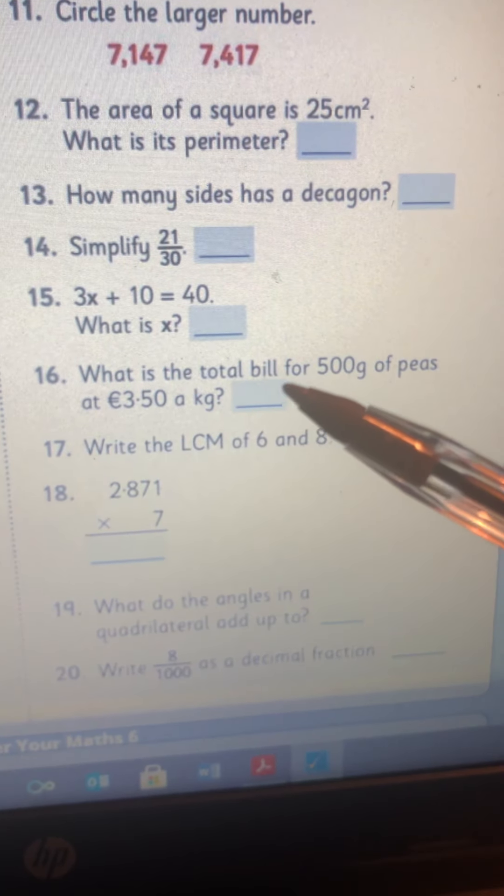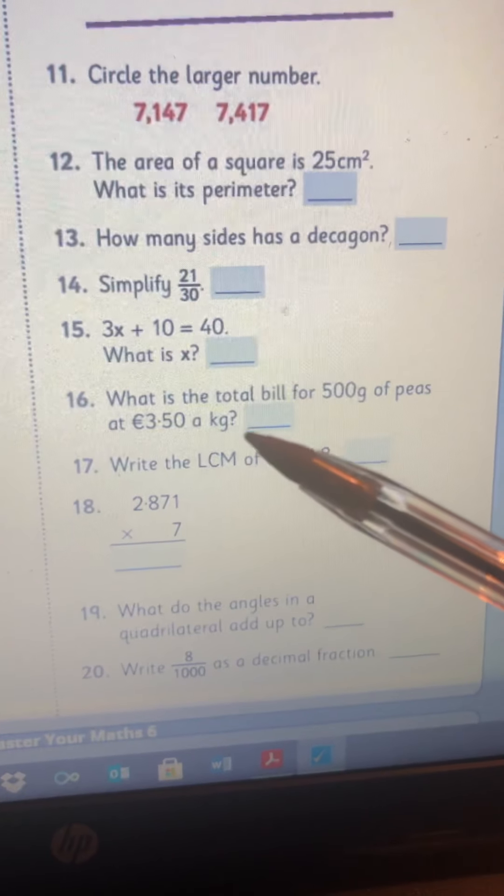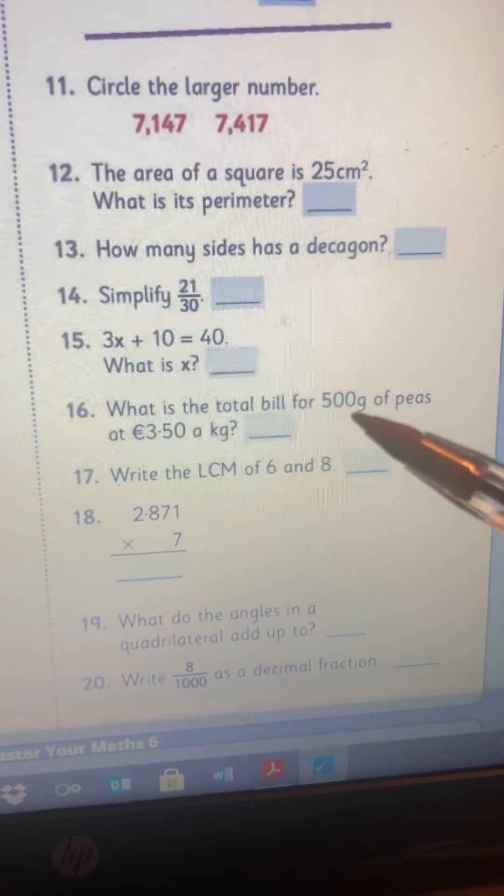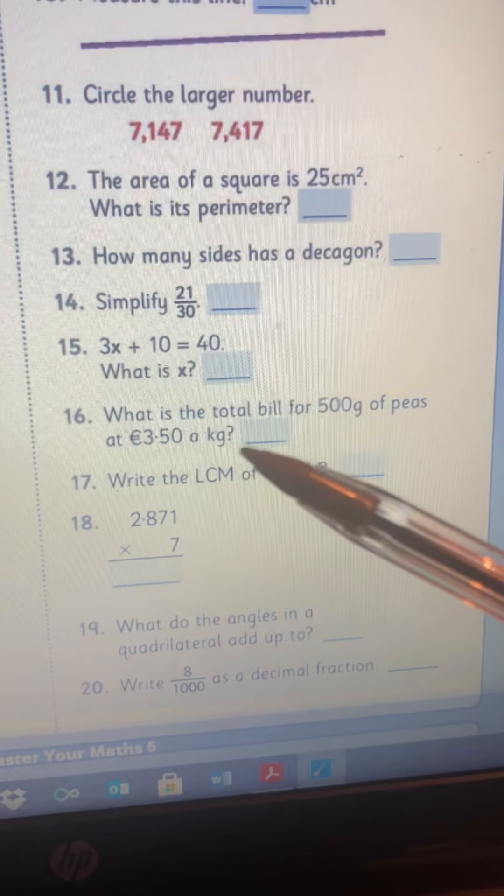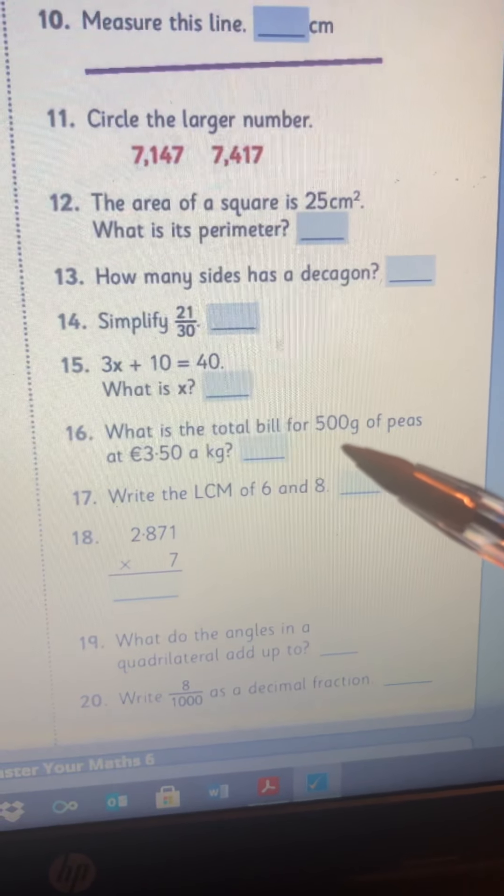16, what is the total bill for 500 grams of peas at 350 a kilogram. So you need to find out how many grams are in a kilogram and you just want to know then how many 500 grams is.